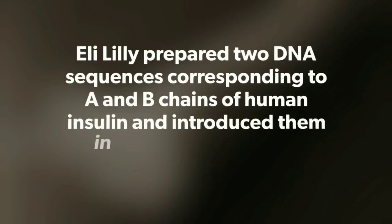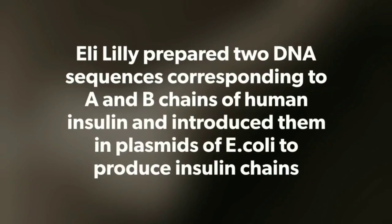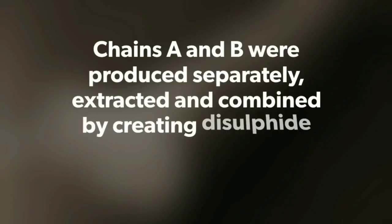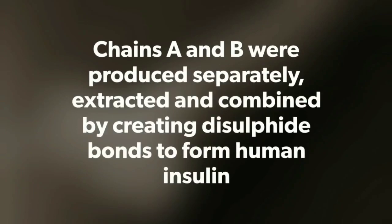Eli Lilly prepared two DNA sequences corresponding to the A and B chains of human insulin and introduced them into plasmids of E. coli to produce insulin chains. Chains A and B were produced separately, extracted, and then combined by creating disulfide bonds to form human insulin.